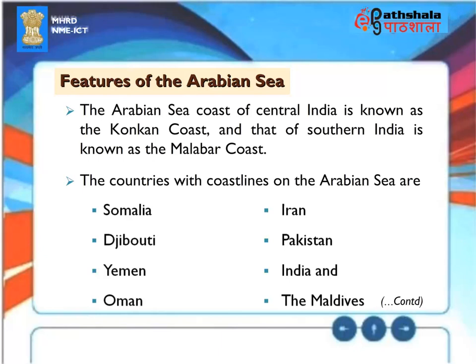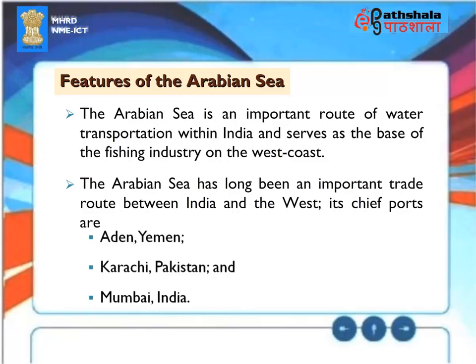Features of the Arabian Sea. The Arabian Sea coast of central India is known as the Konkan coast and that of southern India is known as the Malabar coast. The countries with coastlines on the Arabian Sea are Somalia, Djibouti, Yemen, Oman, Iran, Pakistan, India and the Maldives. The Arabian Sea is an important route of water transportation within India and serves as the base of the fishing industry on the west coast. The Arabian Sea has long been an important trade route between India and the west. Its chief ports are Aden, Yemen, Karachi, Pakistan and Mumbai, India.